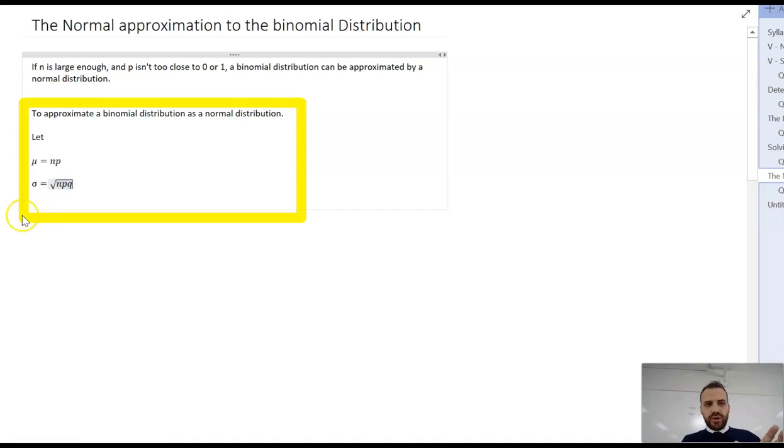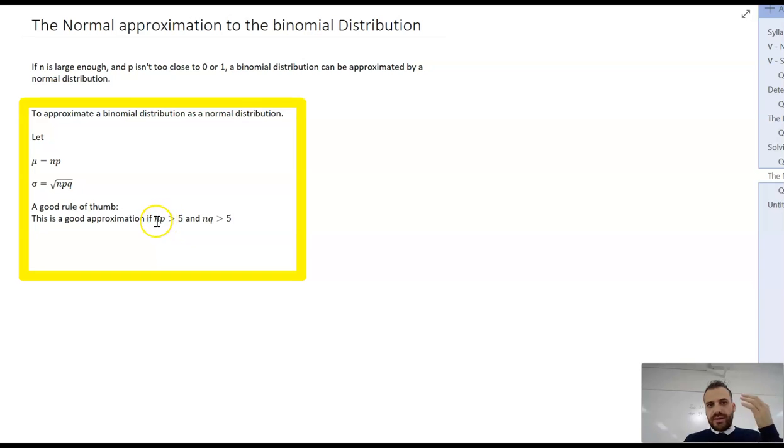Now, this works, but you might just need to do a little bit of a tester to make sure. Good approximation if np is greater than 5 and nq is greater than 5 as well. So in my example, 200 times 0.64 is going to be like 120. That's way more than 5. So that's a good approximation. nq, 200 times 0.36 is going to be 60, 70, something like that. That's way more than 5. So obviously, my example is a good approximation.